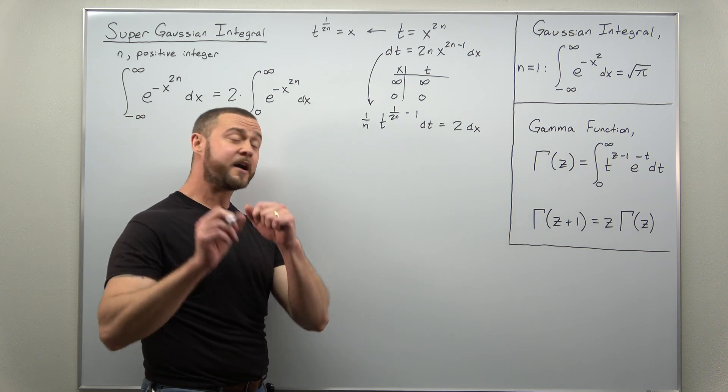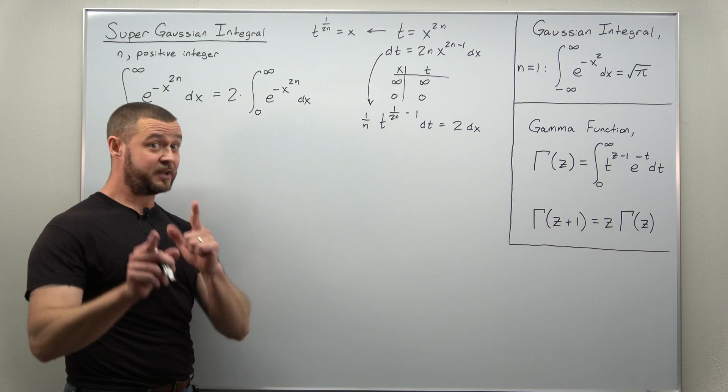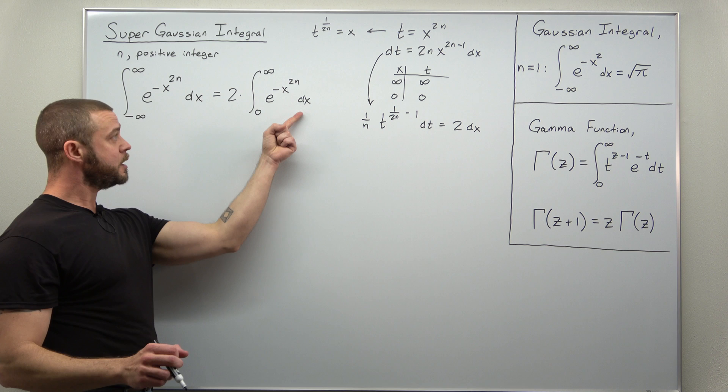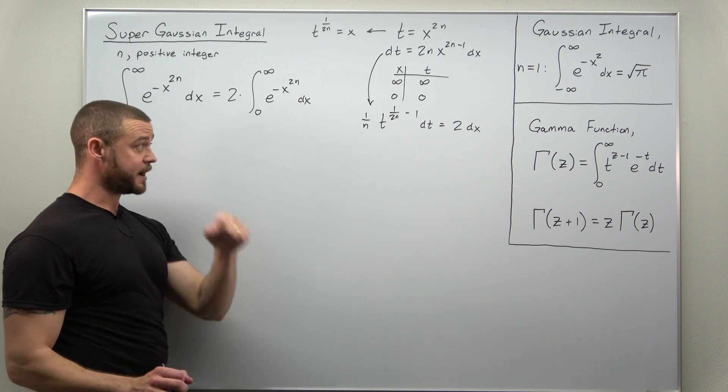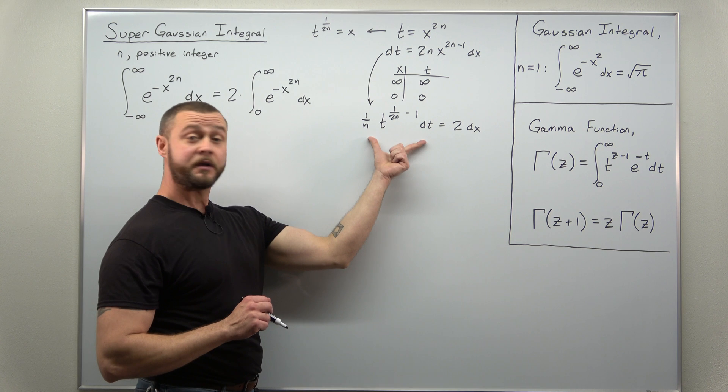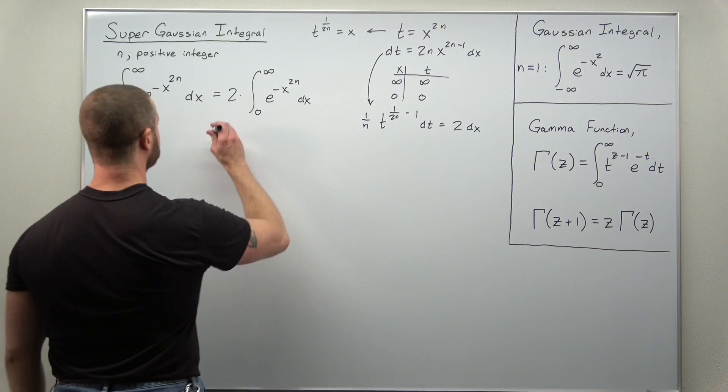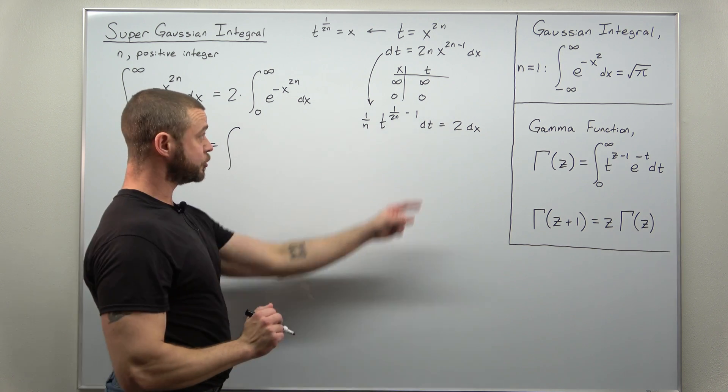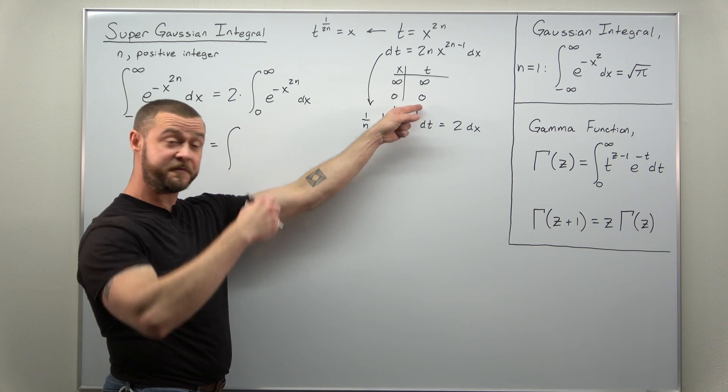Now with all that, we can convert our integral from x to t. First thing, I'm going to take that factor of 2, bring it inside the integral there. That way I can convert 2dx to this expression. Our integral still goes now from 0 to infinity.